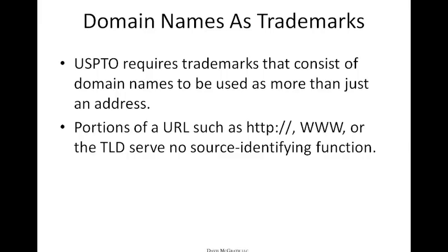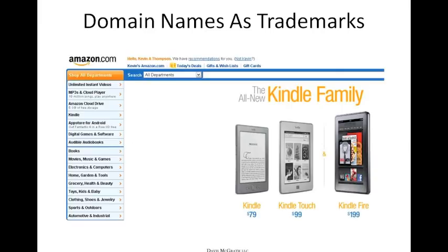Look at Amazon.com as a good example — they do a good job of incorporating the name as part of the source identifier. The .com portion is considered part of the Amazon name, and it's used more than just as a web address. It's definitely performing a source-identifying function.